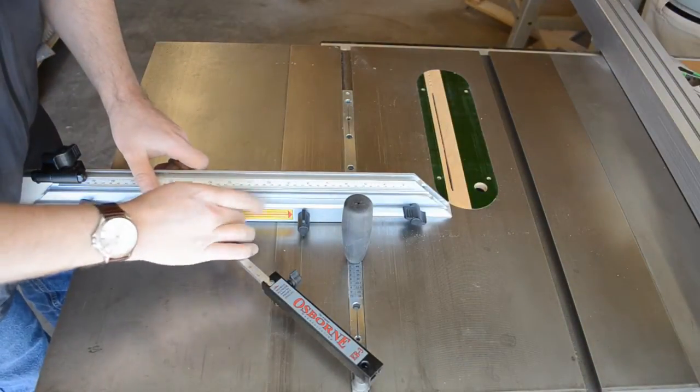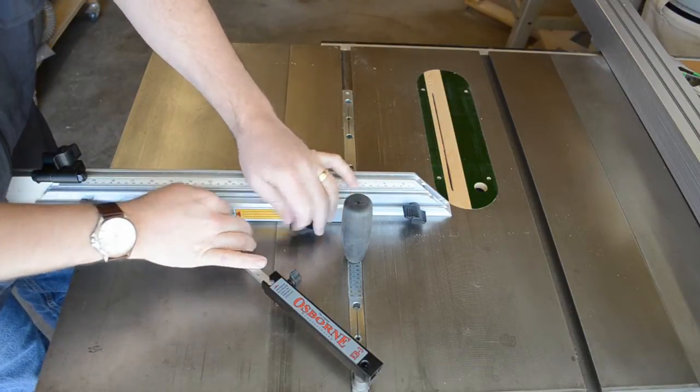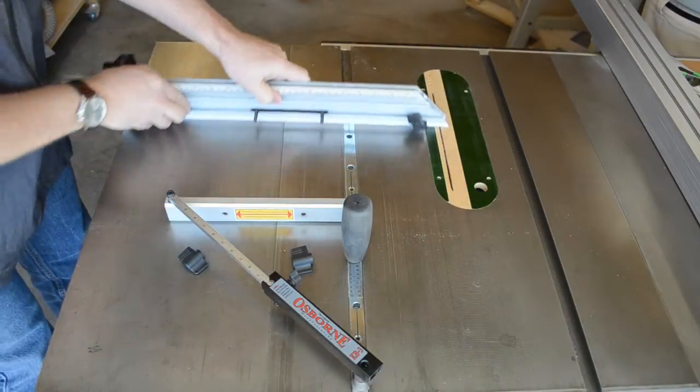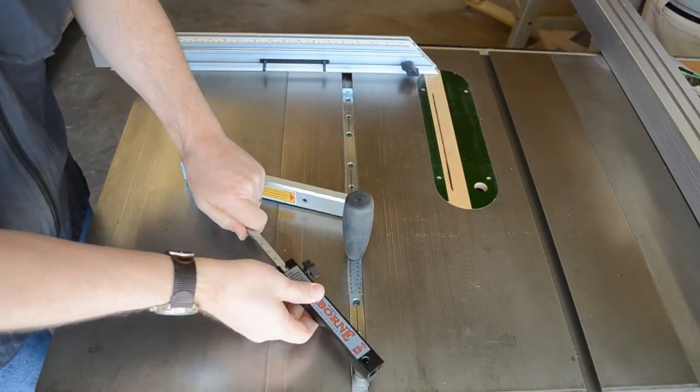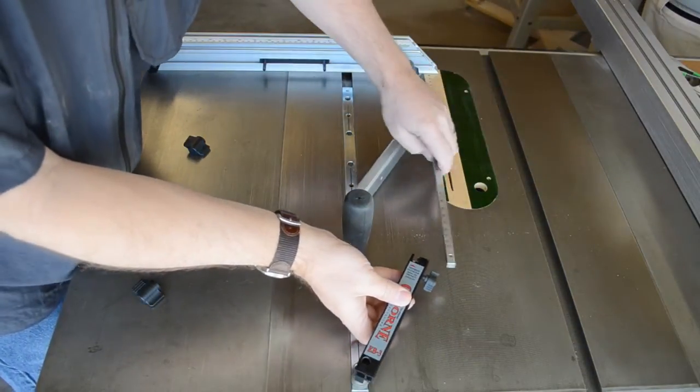When it becomes necessary to work on the opposite side of the blade, the EB3 can easily be reversed. Remove the fence clamp knobs located on the fence mount and separate the fence from the mount. Loosen the angle clamp knob and pull the inner brace out of the outer brace.